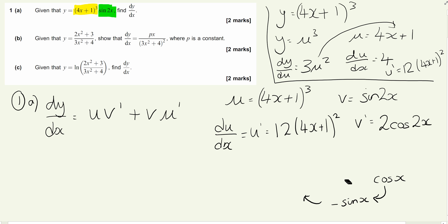This one is going to be 2cos(2x), sine differentiates to cos(2x). To finish this question, and it is quite a lot of work for two marks, we need to substitute everything back into the formula. We've got (4x + 1)³ times v', so times 2cos(2x). I tend to put any numbers at the front, just makes it look a little tidier.